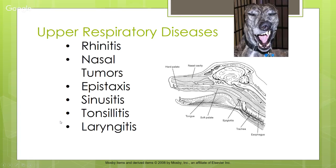The upper respiratory diseases we'll discuss across different species are rhinitis, nasal tumors, epistaxis, sinusitis, tonsillitis, and laryngitis.